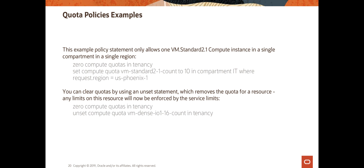The second example also zeroes out the compute quotas, and then it unsets any quotas on the vm-dense-io1 shape, so the limits are now enforced by the default service limits. The compartment quotas can be set on the root compartment, and an administrator can set quotas on their own compartments and any child compartments. The quotas set on a parent compartment override quotas set on child compartments, so the child compartment cannot override what the parent compartment quota policy statement says.